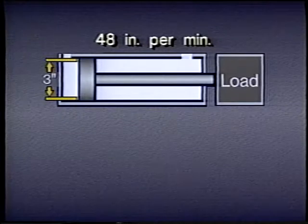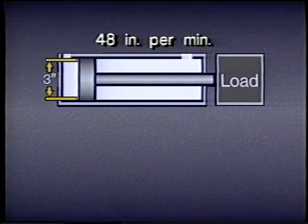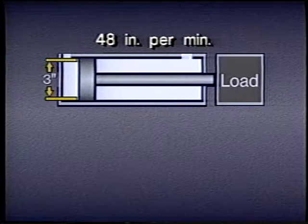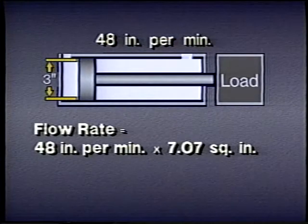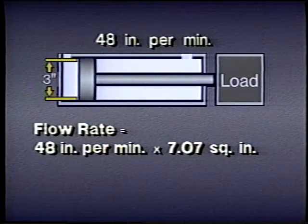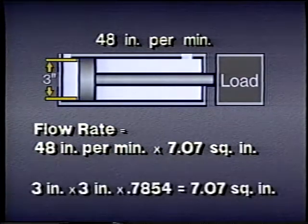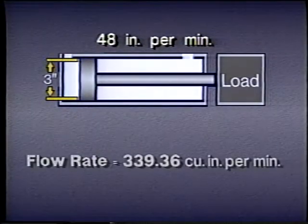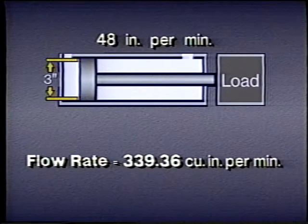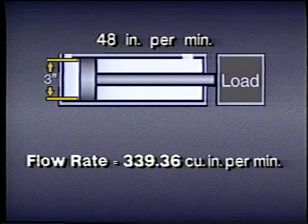Suppose we need to determine the flow rate necessary to move a load 48 inches per minute using a cylinder with a 3-inch bore. To calculate the flow rate, we multiply 48 inches per minute times 7.07 square inches — that's the area of a piston with a 3-inch diameter. The answer is 339.36 cubic inches per minute.